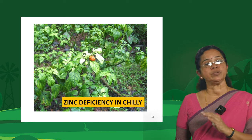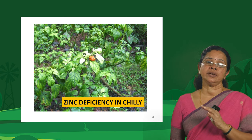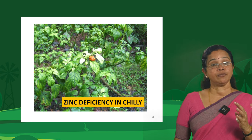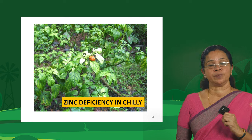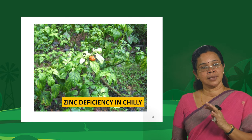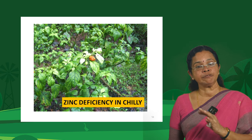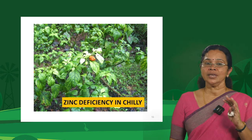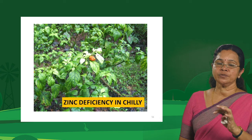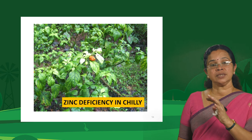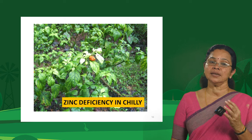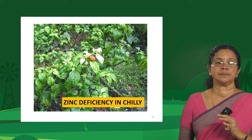A common question is how to distinguish zinc deficiency from iron deficiency, since both show whitish coloration. In the case of iron, the symptom is confined to the younger leaves, whereas in the case of zinc, you can see symptoms in both older and younger leaves.